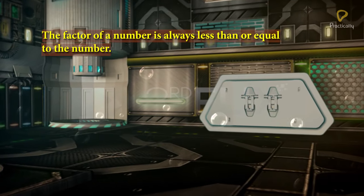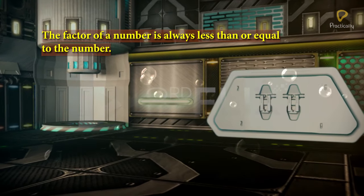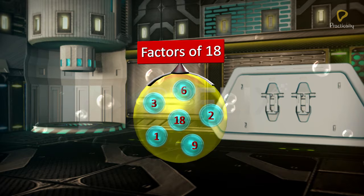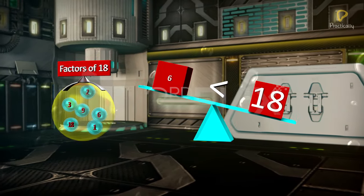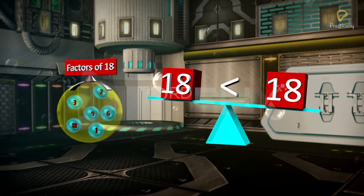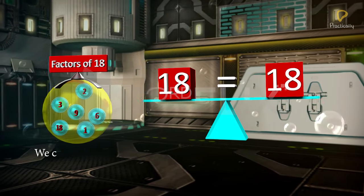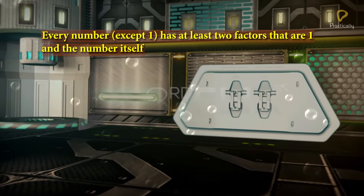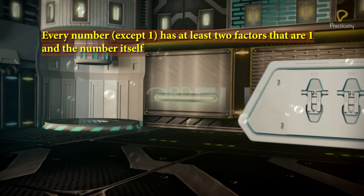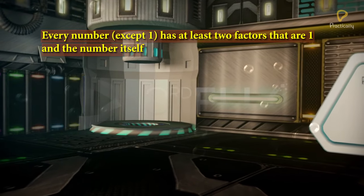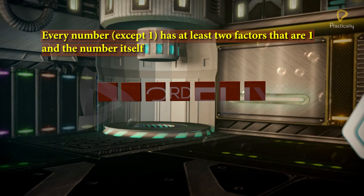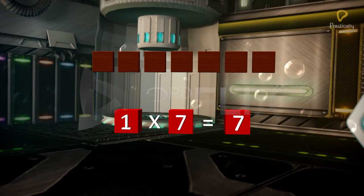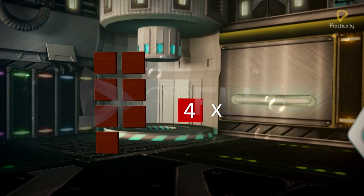The factor of a number is always less than or equal to the number. For example, the factors of 18 are 1, 2, 3, 6, 9, and 18. Here, 1, 2, 3, 6, and 9 are less than 18, and 18 is equal to 18. Every number except 1 has at least two factors: 1 and the number itself. For example, the factors of 7 are 1 and 7. We can write 1 multiplied by 7 equals 7. No other pair of numbers when multiplied together would give the product 7.